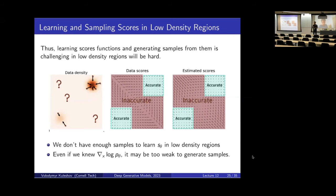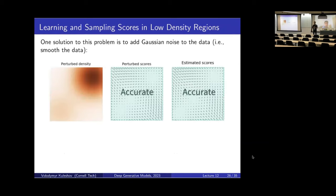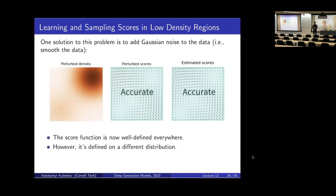The solution to this manifold problem is to add noise to the data — to smooth the data distribution. For example, if we blur or perturb the density such that it covers more of the data distribution, we would get something with two modes that cover most of the space. Therefore, the score function will be well-defined everywhere. But now we have a different distribution, so that's a problem. There's a trade-off: we could apply more noising and smoothing to make learning the score easier, but in doing so we change the data distribution, which is bad.